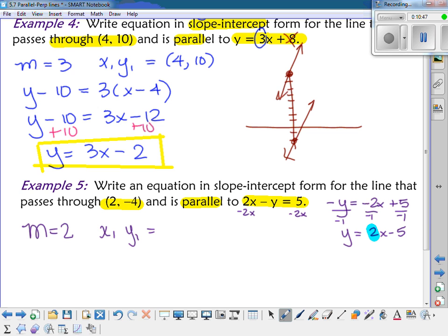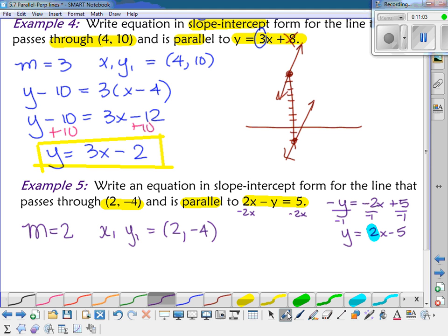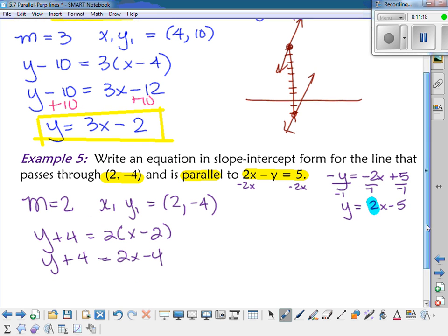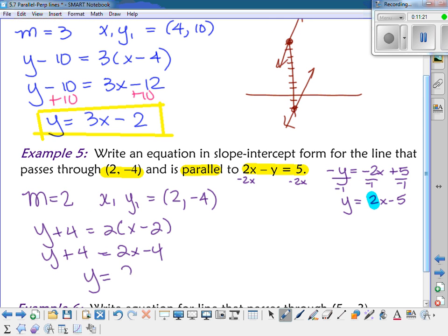And X sub 1, Y sub 1 equal to 2, negative 4. All right, why don't you guys finish that one off and figure out what the slope-intercept form is going to be on your whiteboards. Okay, so when you plug it in, you get Y minus a negative 4, so it's plus 4, equals 2 times X minus 2. And then you distribute the 2 and you get 2X minus 4. And then we subtract 4 from both sides. And we get Y equals 2X minus 8.